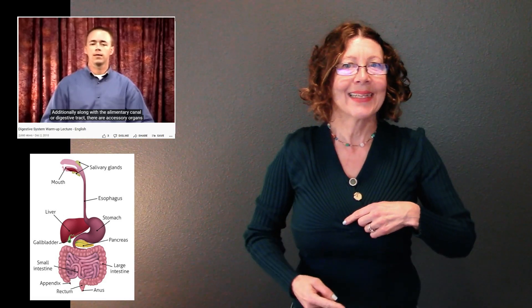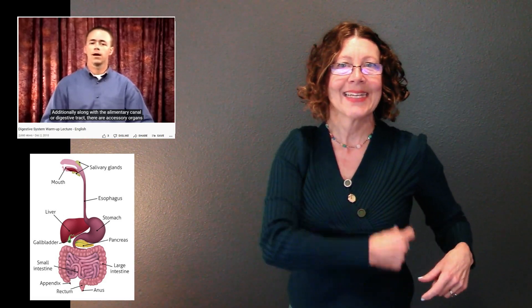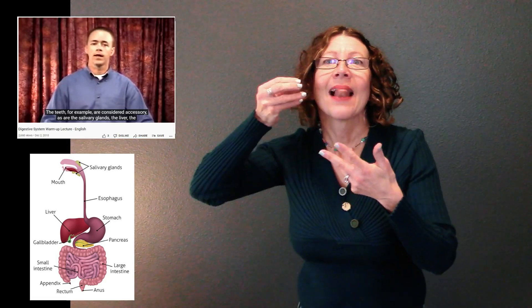Additionally, along with the alimentary canal or digestive tract there are accessory organs in the digestive system. These are of importance but they are not part of that big 30-foot tube. The teeth, for example, are considered accessory, as are the salivary glands, the liver, the pancreas, and the gallbladder.